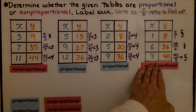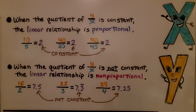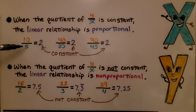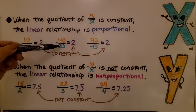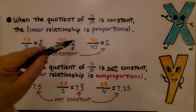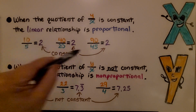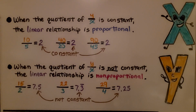We write the Y to X ratio to find out. When the quotient of Y to X is constant, the linear relationship is proportional. We have 10 to 5, 40 to 20, and 90 to 45. They're all 2 — they're all constant. We have 2, 2, and 2.